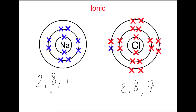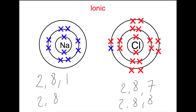This now leaves sodium with an electron arrangement of 2,8 — like its nearest noble gas, neon — whereas chlorine is now 2,8,8, like its nearest noble gas, argon. As the central charge on the nucleus is 11+ and now we only have 10 electrons, sodium becomes a positive ion. Chlorine has a charge on the nucleus of 17+ whereas now it has 18 electrons, which means it becomes a negative ion. The electrostatic attraction between the positive and negative ions causes an ionic bond. This is a 3D effect resulting in a large 3D lattice of alternating positive and negative ions.